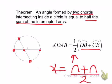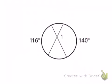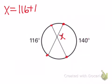Let's look at some examples. In our first example, we want to find the measure of angle one, so let's put an x there. I notice that angle one is formed by two chords — the endpoints are on the circle. So I'm going to use my formula: the angle equals the sum of the arcs. One arc is 116 and the other arc is 140, and we want to take half of the sum.